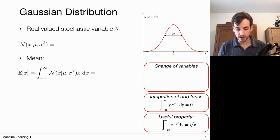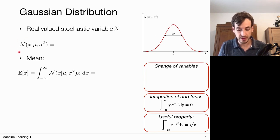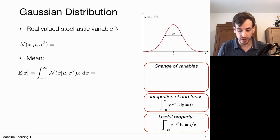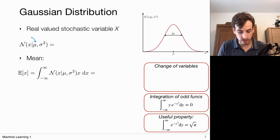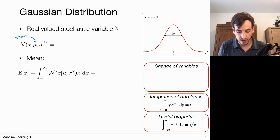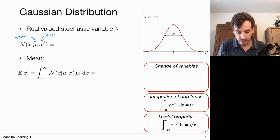The Gaussian distribution, also often called a normal distribution (hence the N notation), is a distribution with respect to a random variable x. It is parameterized by μ (which we will refer to as the mean) and σ² (which we will refer to as the variance). We write x ~ N(μ, σ²).